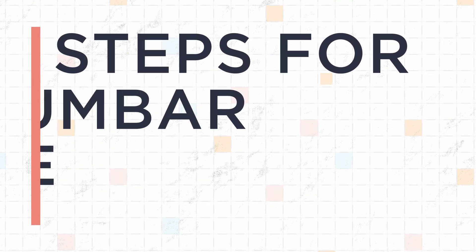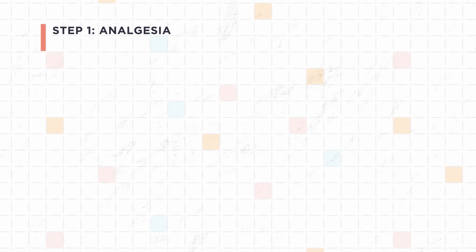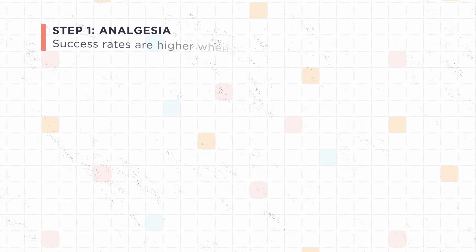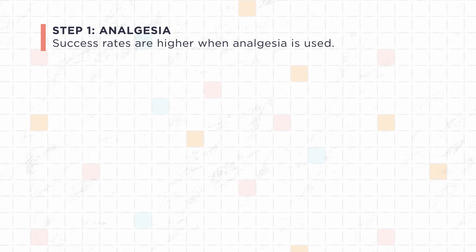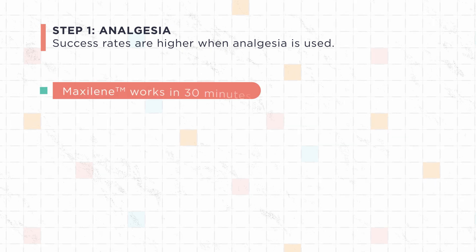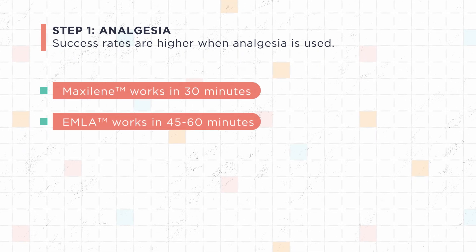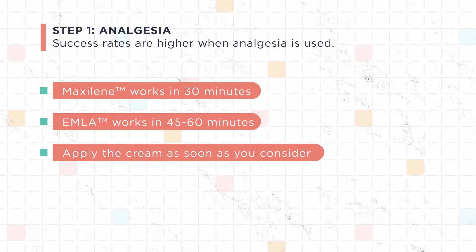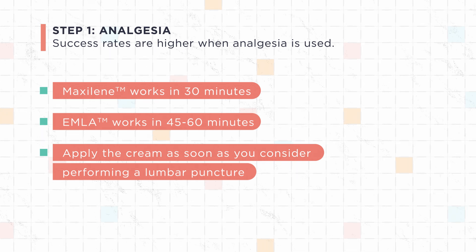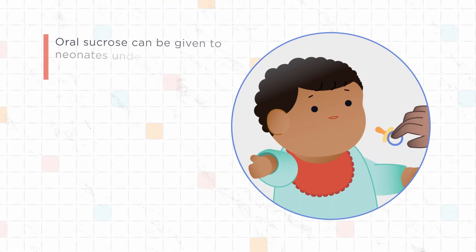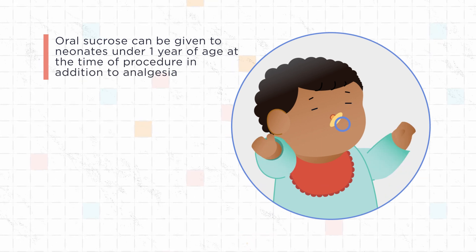Now let's review the steps for a lumbar puncture. Step 1: Analgesia. Success rates for pediatric lumbar punctures are higher when analgesia is used. If time allows, apply topical analgesic cream — Maxilene works in 30 minutes and Emla works in 45 to 60 minutes. Apply the cream as soon as you consider performing a lumbar puncture to avoid delays. Oral sucrose can be given to neonates under one year of age at the time of the procedure in addition to topical analgesia.